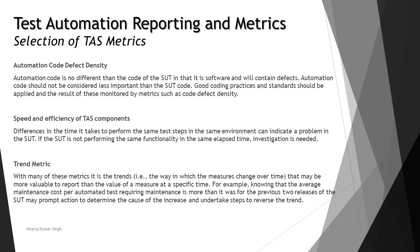The third metric is automation code defect density. The automation code is no different from the SUT code in that it is software and will contain defects. Automation code should not be considered less important than the SUT code. Good coding practices and standards should be applied, and the results monitored by metrics such as code defect density, which determines what number of defects have been identified in a particular piece of code.